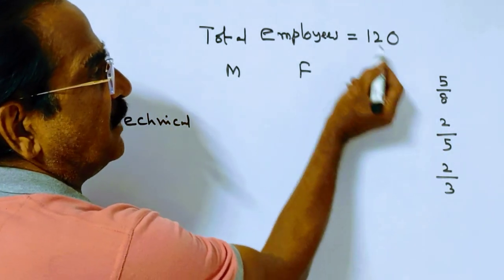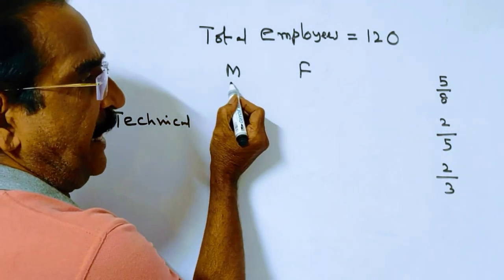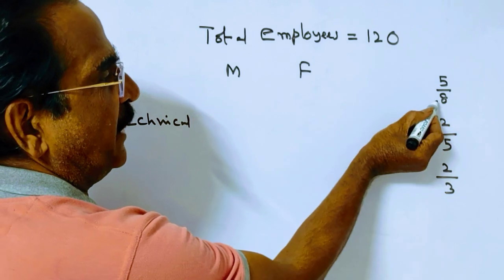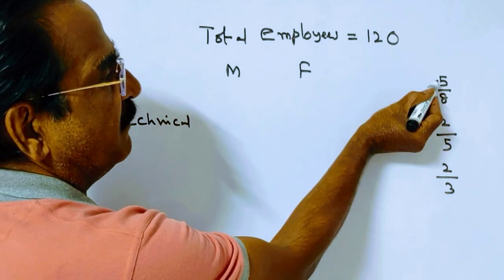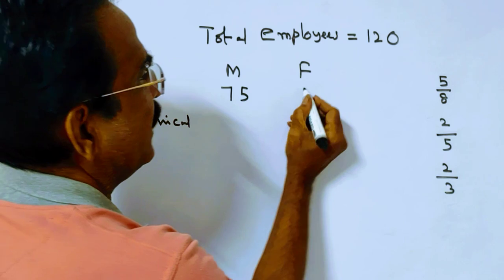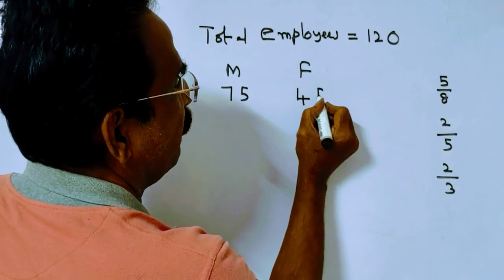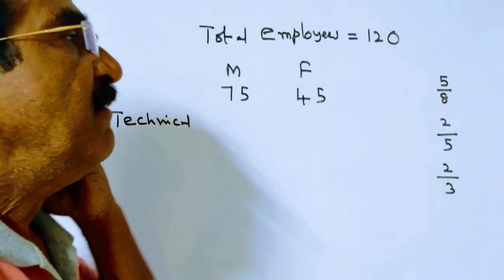Friends, 5 by 8 of the total number of employees are male. 120 into 5 by 8 equals 75 males. So the remaining 45 are female.